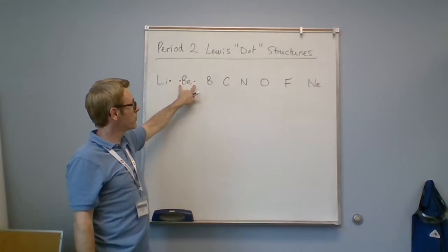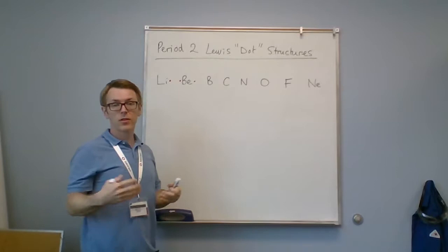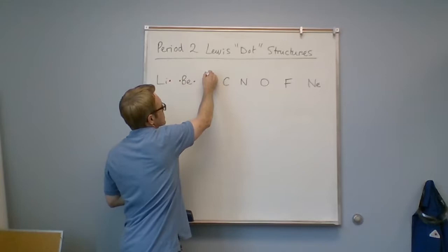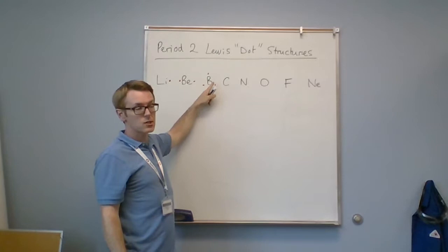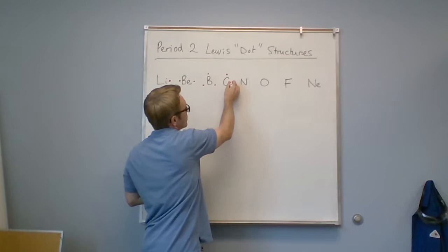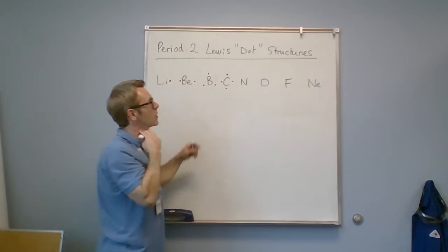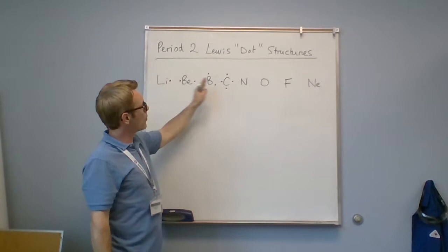Elements in group—now this is not Group 3, it's Group 13 because we have to go across the d-block. So Group 13 have three dots. We draw them like this, kind of like the points on a triangle. And then Group 14 has four dots, so top, bottom, left, and right.